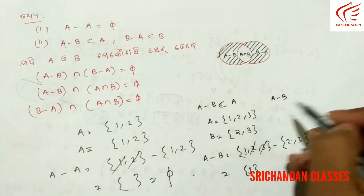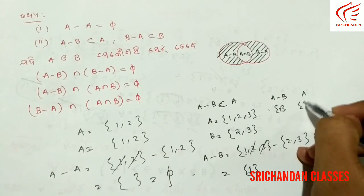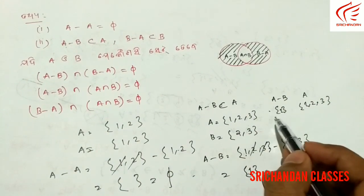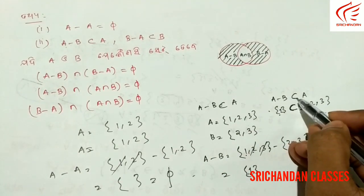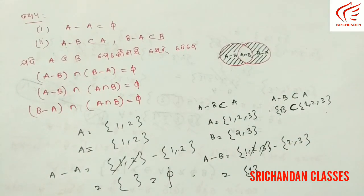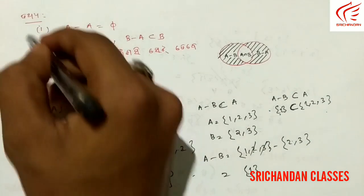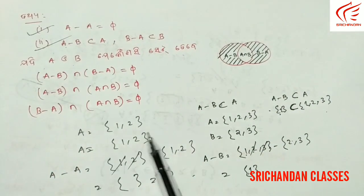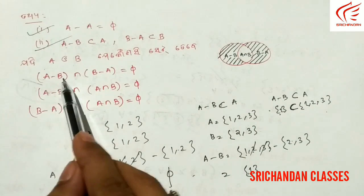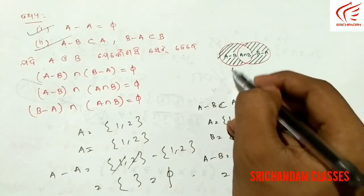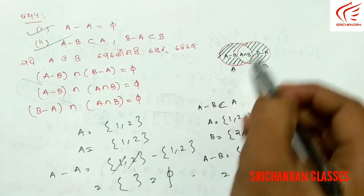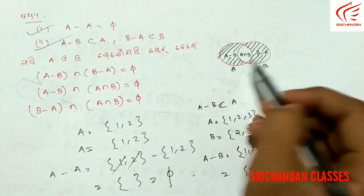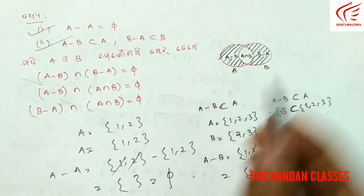A minus B gives us 1. A set is 1, 2, 3. So we have a set — this is a subset of A. A-B will be a subset of A. This is B-A. B-A is 7. A-B is a subset of A-B. So B-A is a subset of B. This is B-A.